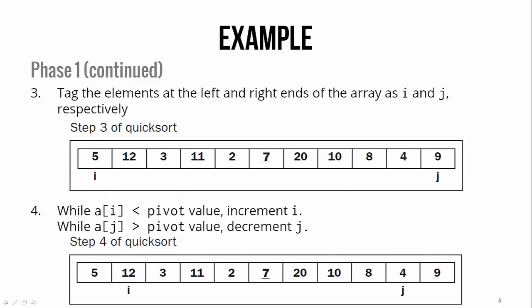Then we tag the elements at the left and right end of the array as i and j. And we adjust i and j, bringing them closer to the pivot until they're both on values that are out of place. In this case, that's 12 and 4. 12 is supposed to be to the right of the pivot. 4 is supposed to be to the left of the pivot.